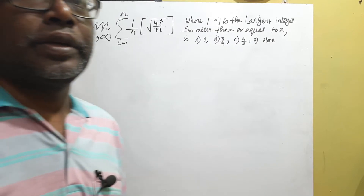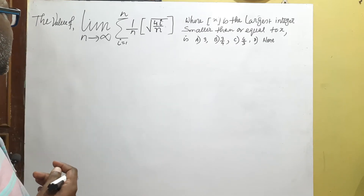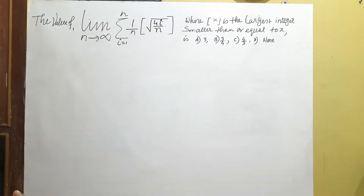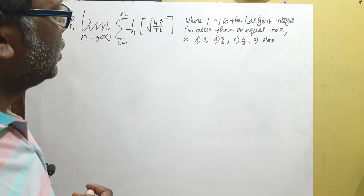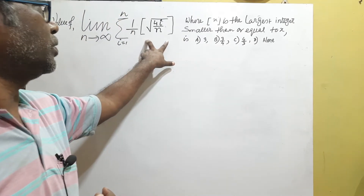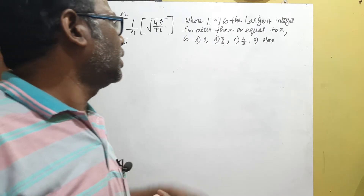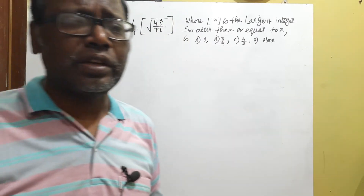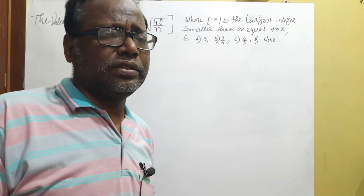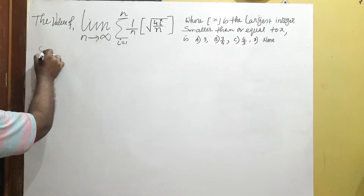Welcome to my channel. This is a most interesting problem: find the value of the limit as n tends to infinity of the summation from i=1 to n of (1/n) · floor(√(4i/n)), where floor(x) is the largest integer smaller than or equal to x. Which option is true? Option A: 3, Option B: 3/4, Option C: 4/3, Option D: none of these.